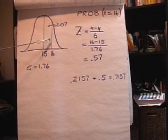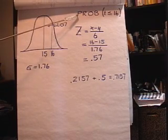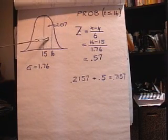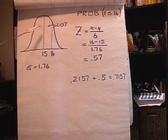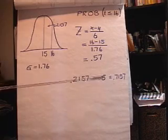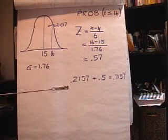So, then, finally, to answer the question, the probability that the total time is less than 16 is this area plus this area, which, of course, is point two one five seven plus the point five to get 71.57 percent.